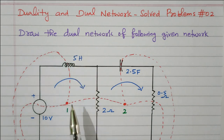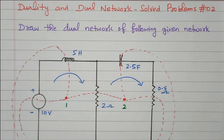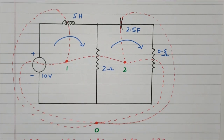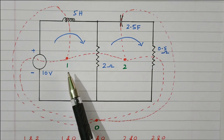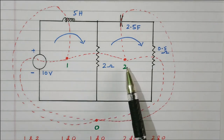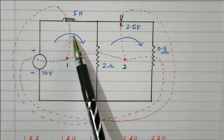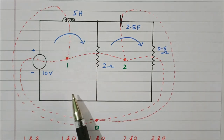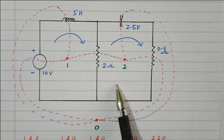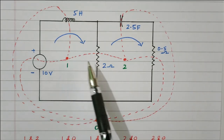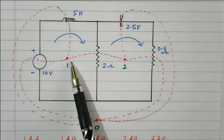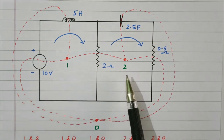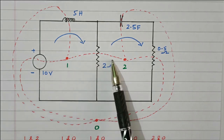We need to draw the dual network for the network shown below. This is the given network. We need to identify the number of loops. Step 1 is we need to place a dot in every loop. This is the first loop — a loop is nothing but a closed circuit. This is the second loop. The current is assumed to be flowing in the clockwise direction. One dot is placed numbered as 1, and one more dot is placed numbered as 2. So two loops are there and two dots are placed.